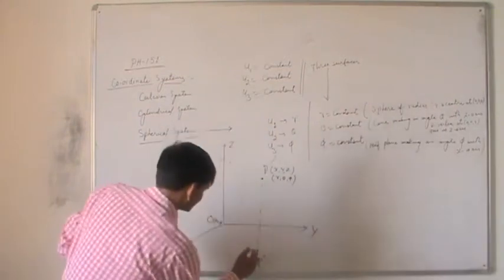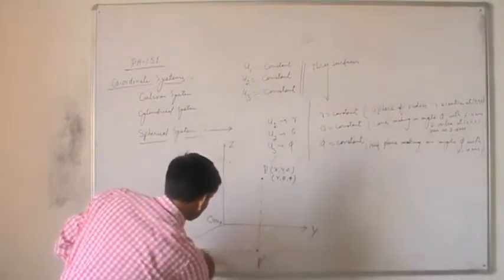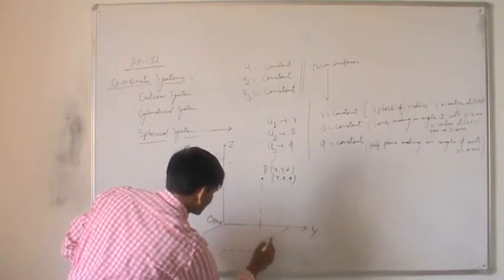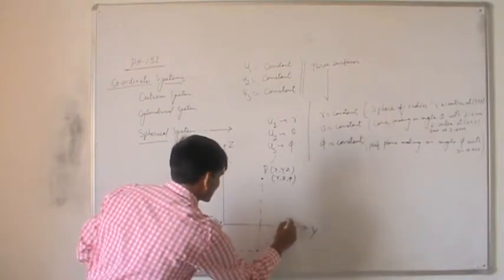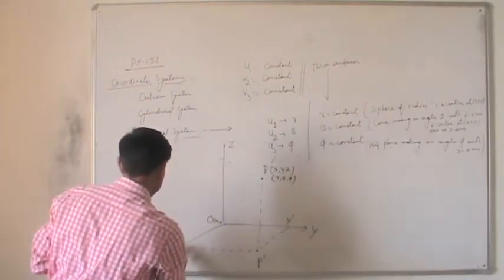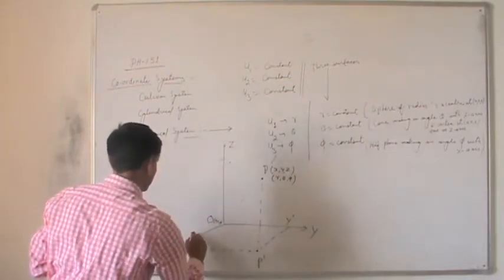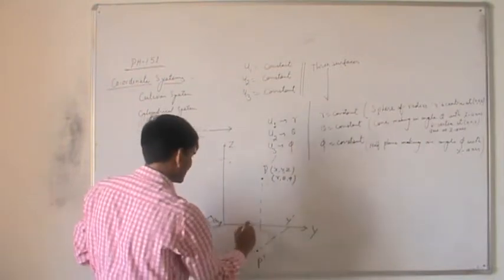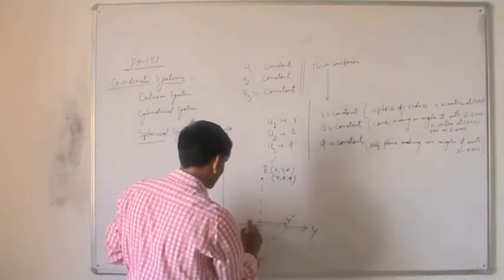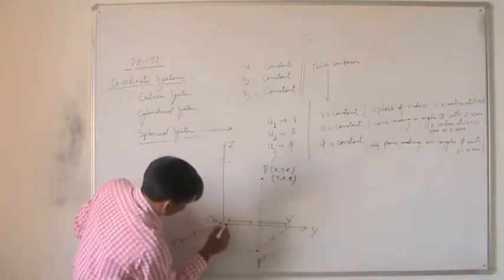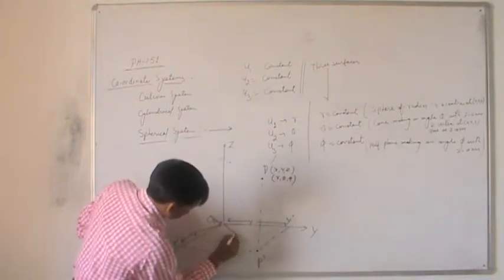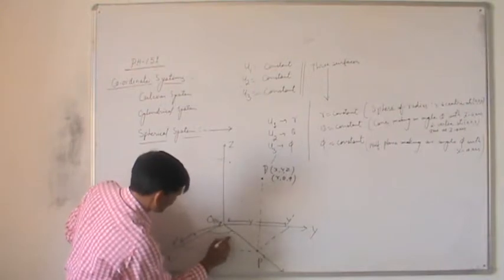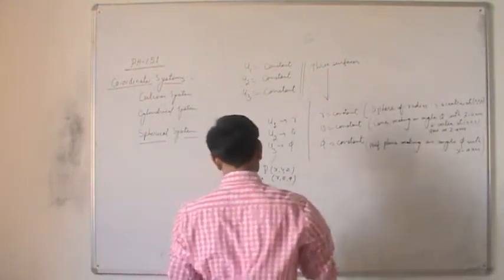I make a projection P-prime. This gives my Y-prime and X-prime values. If you remember, this value is our X value, this value is our Y value, and this angle is my phi angle.